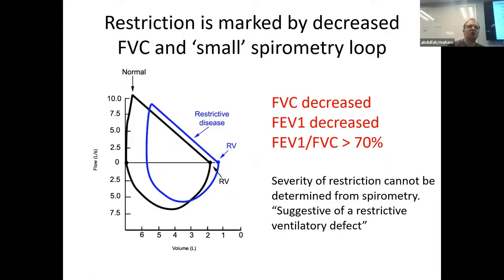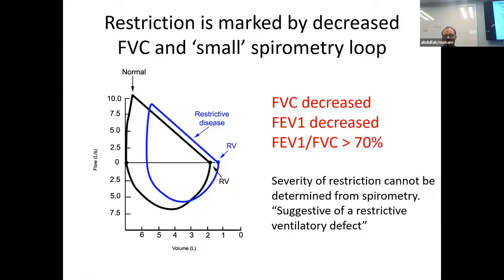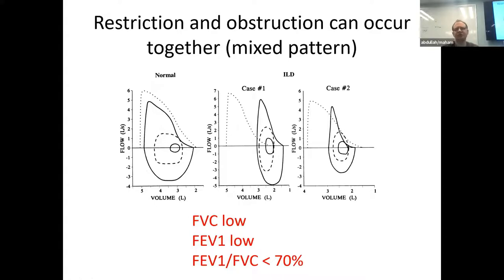Restriction is shown by a small spirometry loop — the FVC is smaller because the patient can't take in as big a breath due to reduced lung space. With a restrictive pattern you'll see FVC decreased, FEV1 decreased, and the ratio greater than 70. If you only get spirometry, the read will be 'suggestive of a restrictive ventilatory defect' because you need total lung capacity values to confirm restrictive lung disease. These patterns can also occur together, as seen in interstitial lung disease, which shows a low FVC with a restrictive pattern and scalloping indicating obstruction.